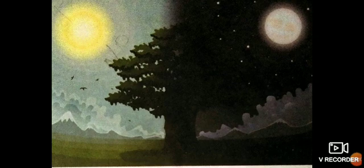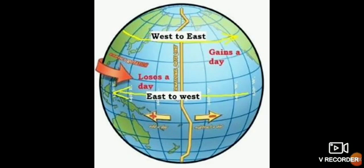The portion that faces the sun is experiencing daytime and the portion that is away from the sun experiences nighttime. Now we had also learned about the international date line last time. The earth is divided into two parts by the longitudes — the eastern hemisphere and the western hemisphere. As we go towards the eastern hemisphere, towards the east, we gain a day. Whereas as we go towards the west, we keep losing one day. Now why does this happen? That is what we are going to see.